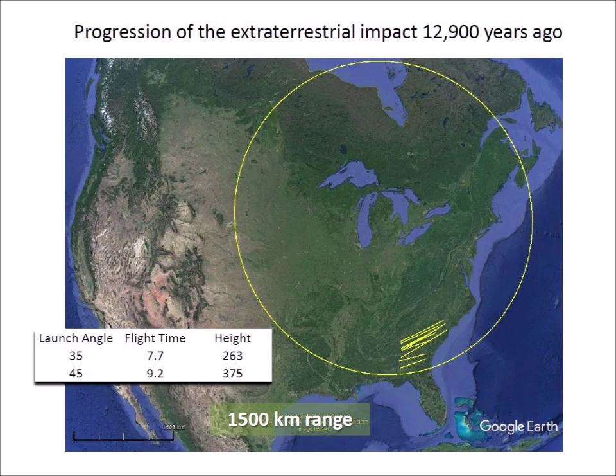Pieces of ice launched at 35 degrees reached a 1,500-kilometer range in 7.7 minutes with a maximum height of 263 kilometers. Ice pieces launched at 45 degrees had a flight time of 9.2 minutes with a height of 375 kilometers. As the pieces of ice made landfall, strong westerly and southwesterly winds carried the splashes to form chevron dunes.